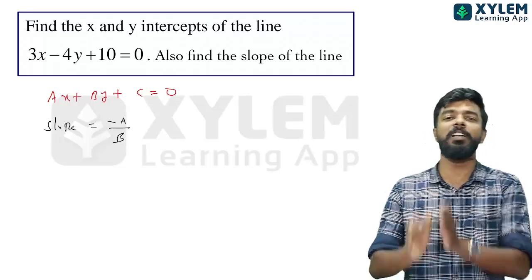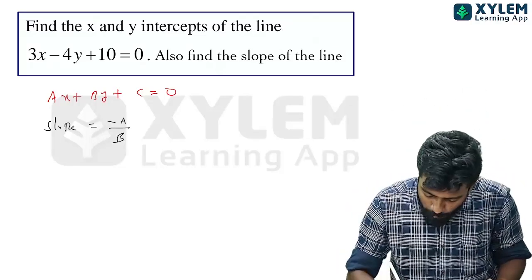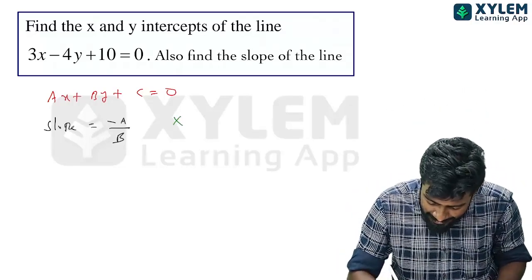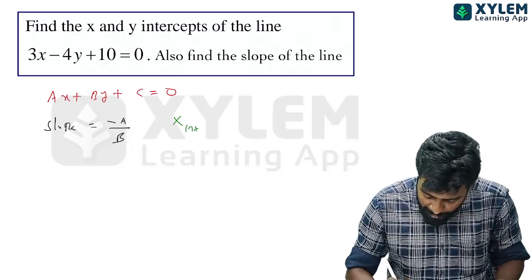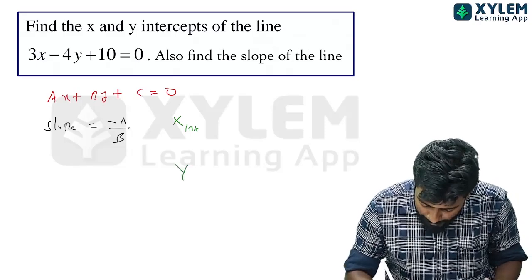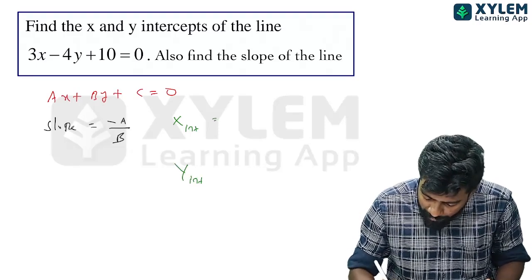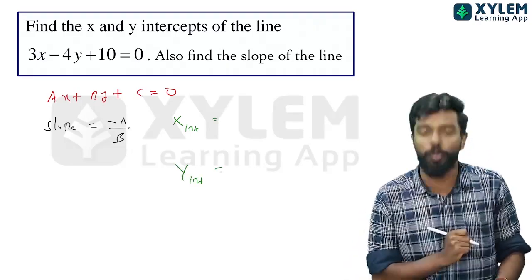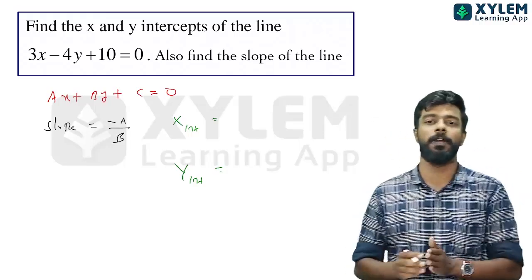The slope of a line ax plus by plus c equals 0 is minus a by b. Next, x-intercept is minus c by a, and y-intercept is minus c by b. These are three values we will learn: slope, x-intercept, y-intercept.